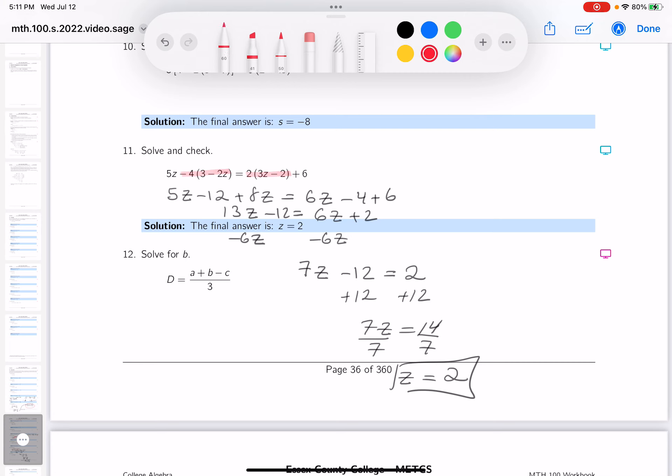Alright, let's get the red pen out and see how we did. z equals 2. We're going to go to the next question. Thank you.